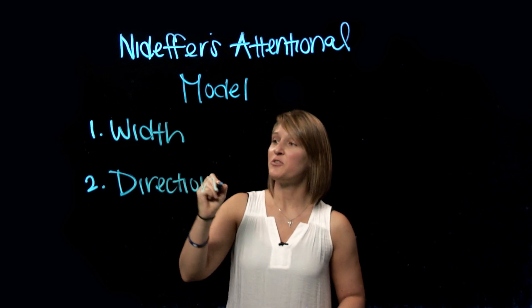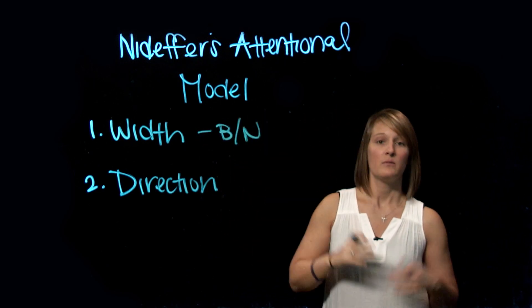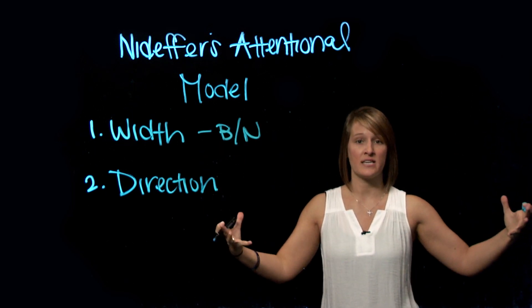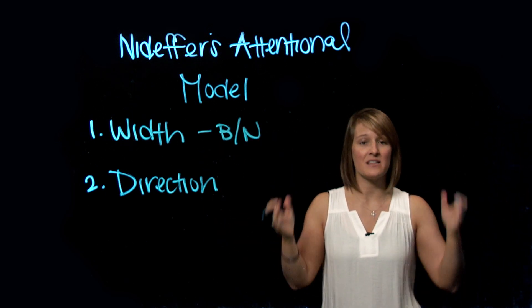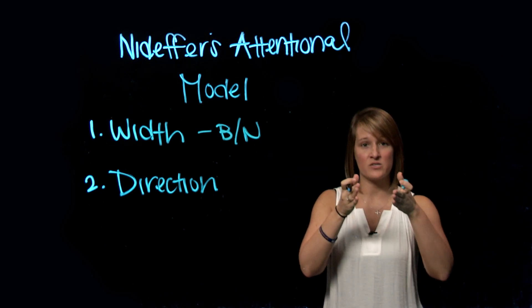So when we think about the width, there are two options. It's either broad or it's narrow. Broad is exactly what it sounds like. It's wide. There's a lot that we take in. Narrow is the exact opposite. Think about having blinders on. One or two things we select in, we come in, right? Zoning in.